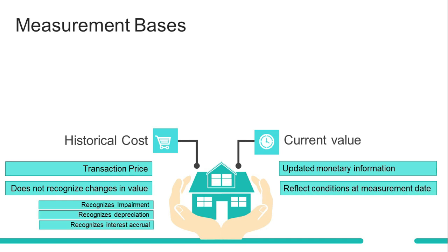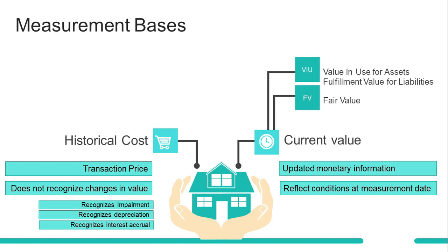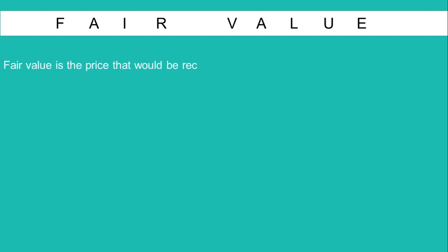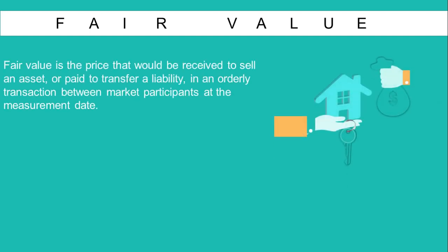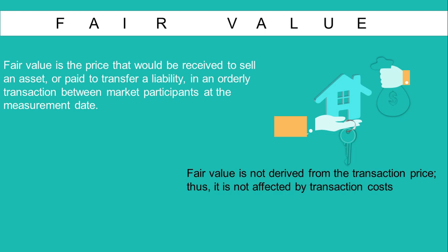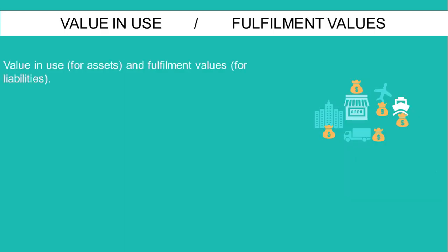The next measurement basis is current value. Current value measures provide updated monetary information that reflect conditions at the measurement date. Current value measurement bases include fair value, value in use or fulfillment value, and current cost. Fair value is the price that would be received to sell an asset or paid to transfer a liability in an orderly transaction between market participants at the measurement date. Fair value is not derived from the transaction price, thus it is not affected by transaction costs.